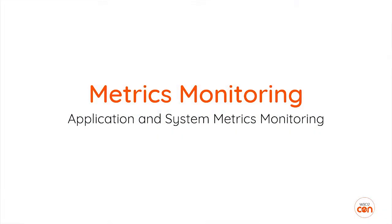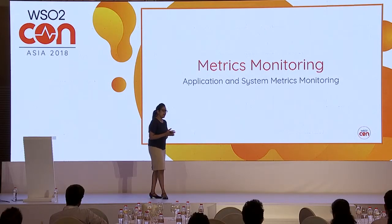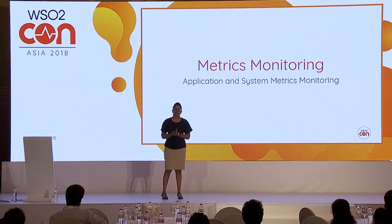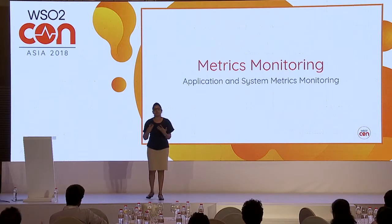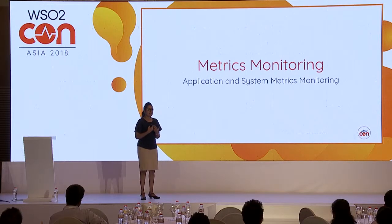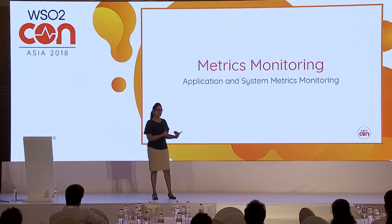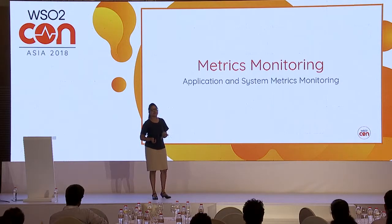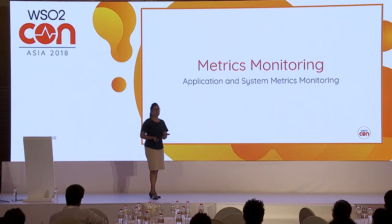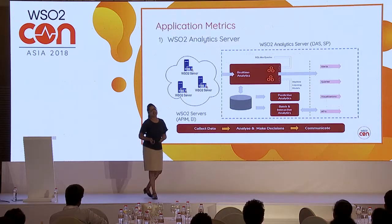Next is metrics monitoring. Here we are mainly focusing on application metrics and system metrics. Application metrics cover application performance — request latency, successful requests, failure requests, and request statistics. System monitoring covers CPU usage, memory usage, network monitoring, and similar metrics.